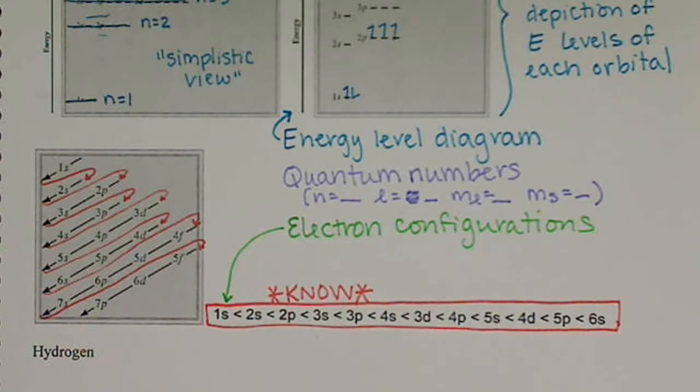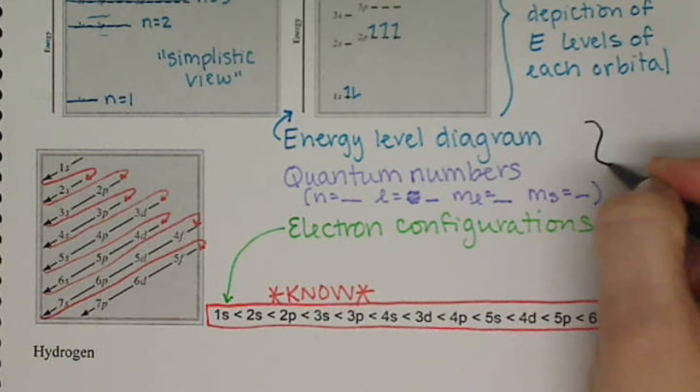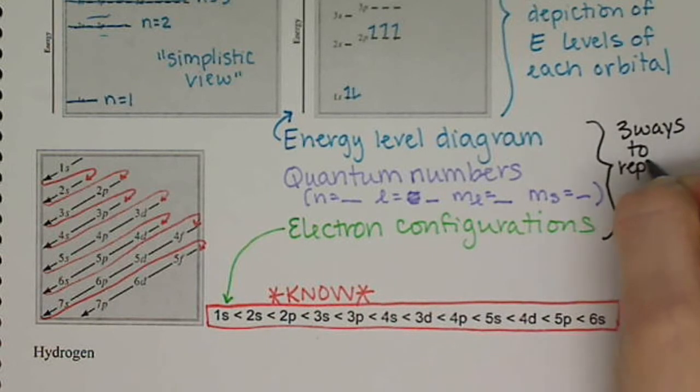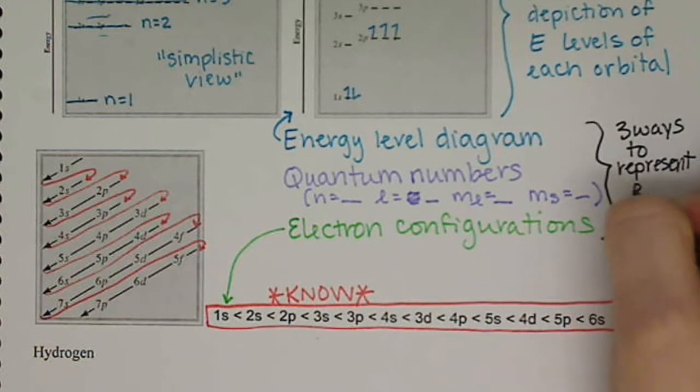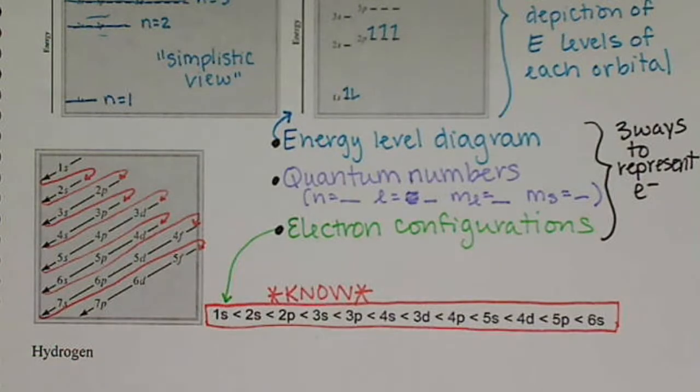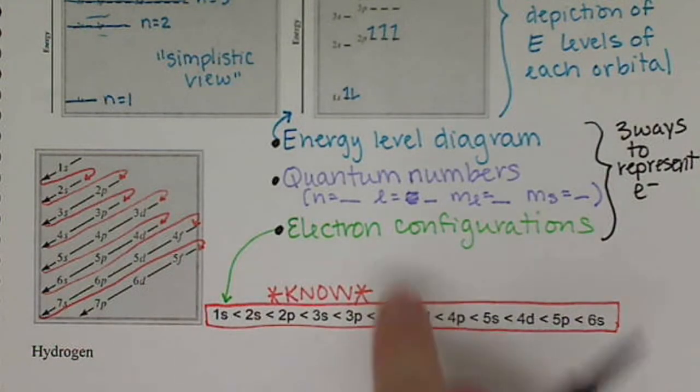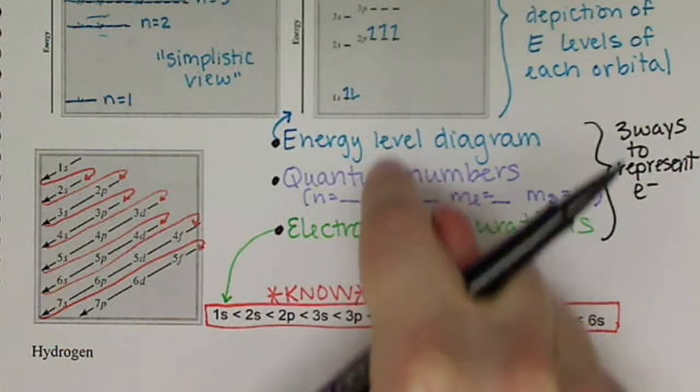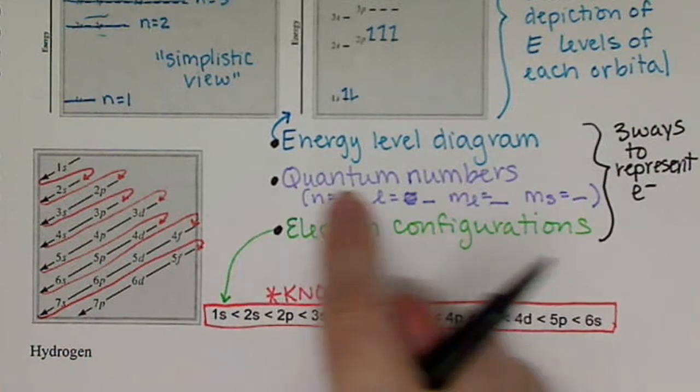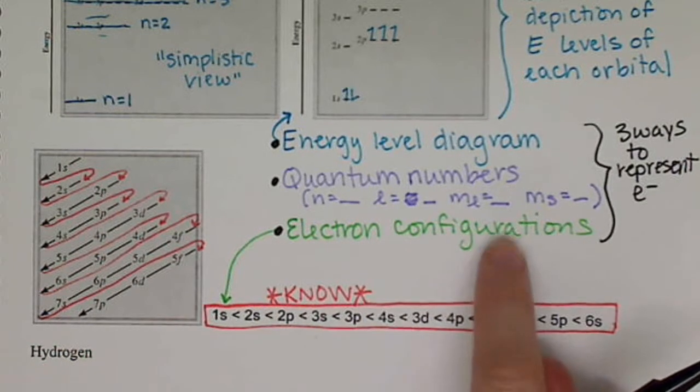All right, we're going to go through a number of examples of representing our electrons on an atom, and we're going to do so by showing three different ways to represent our electrons. So we have energy level diagrams, we have our quantum numbers, and we have our electron configuration. And I'm going to try my best to keep these color coded when we go through our examples. So energy level diagrams will be written in blue, quantum numbers in purple, and electrons configurations in green.